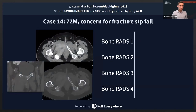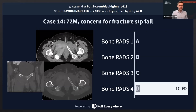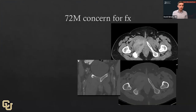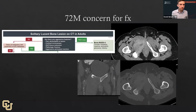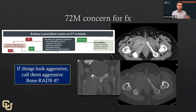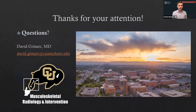Final case: solitary lucent bone lesion on CT. I would argue it has just about every one of the aggressive features — the bone is completely destroyed, a very large soft tissue component. Things look aggressive, call it aggressive — Bone RADS 4. This ended up being from that same patient with metastatic thyroid cancer. Thank you all for hanging through, and we will go to questions.